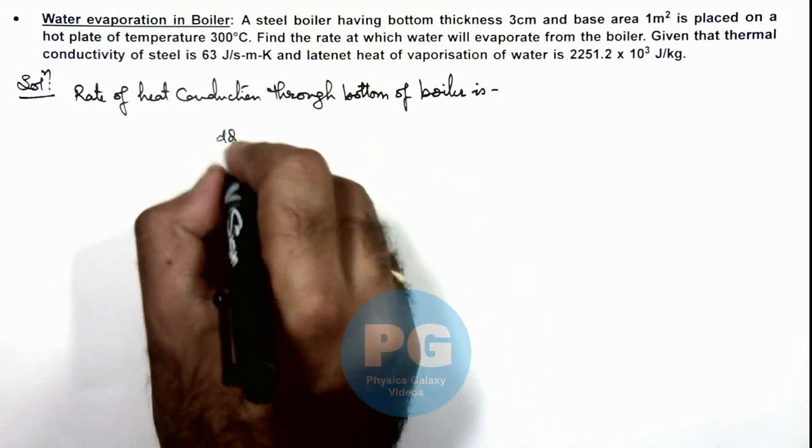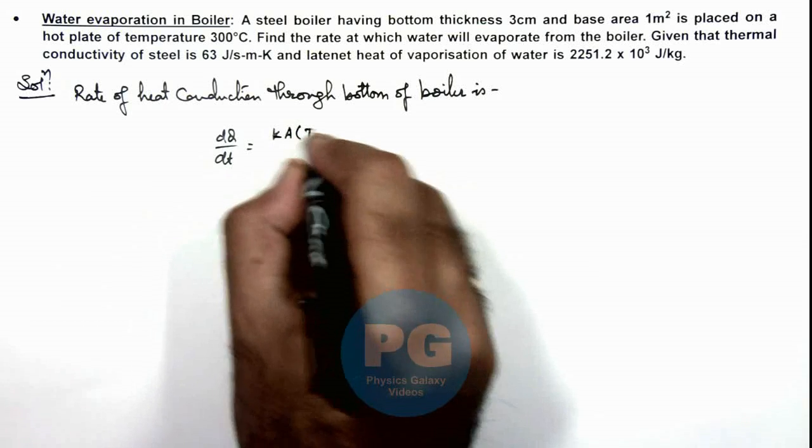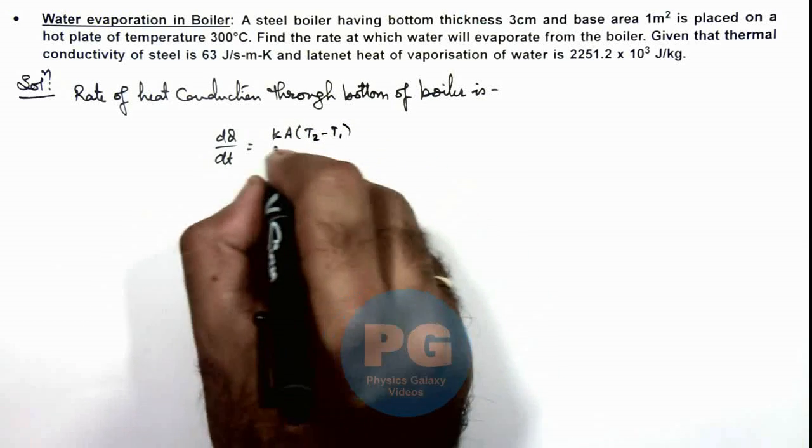This we can write dQ by dt. The rate of heat conduction is kA(T2 minus T1) divided by x.